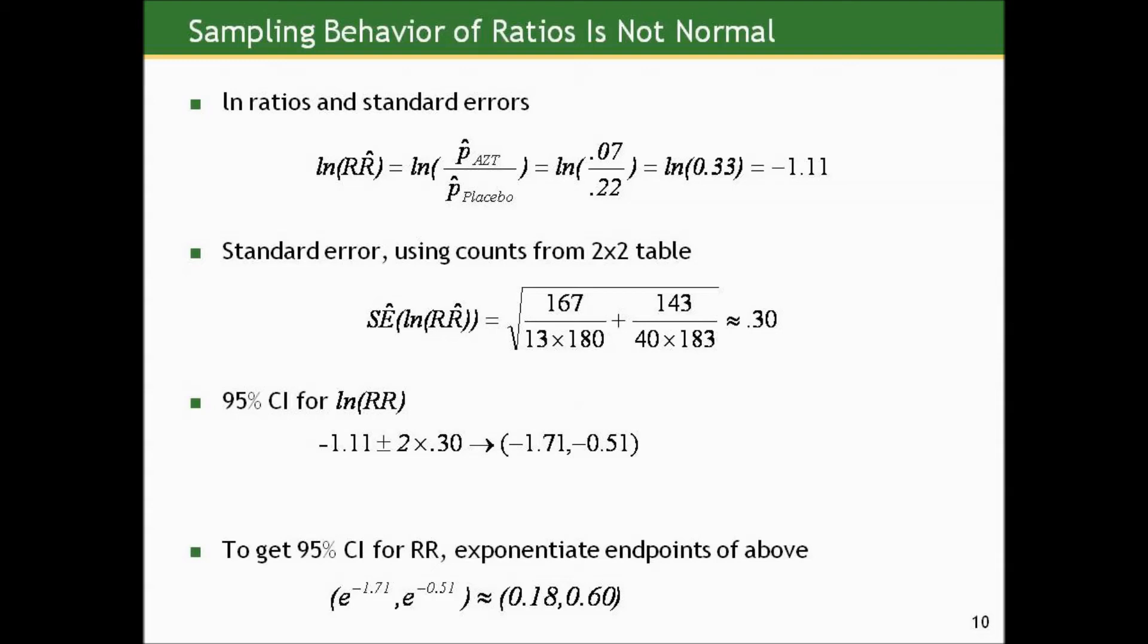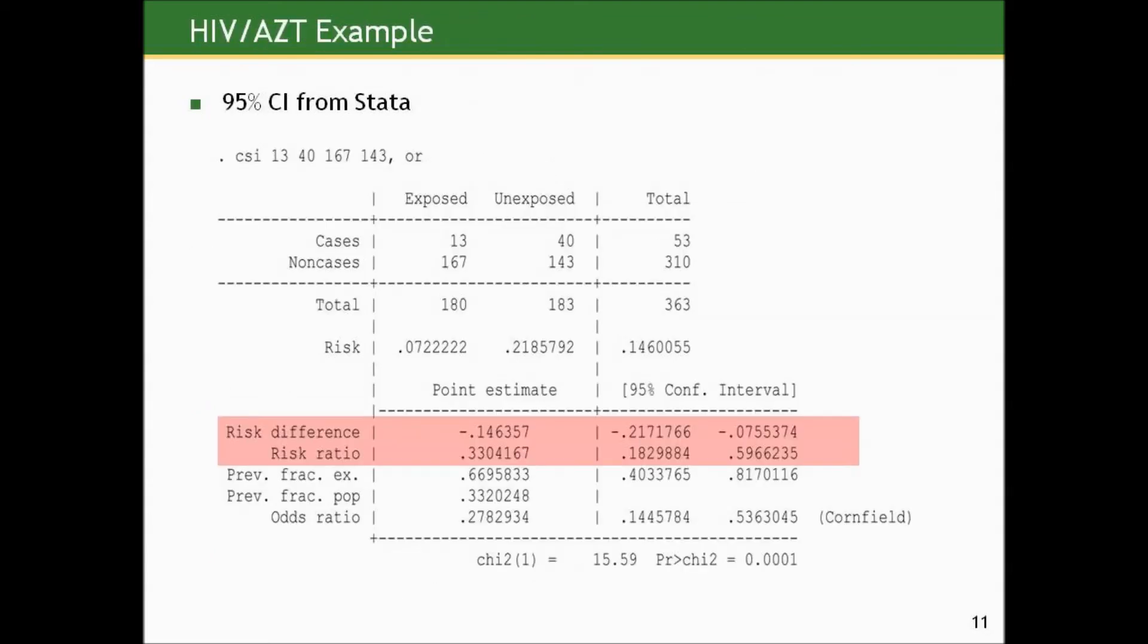So to get a confidence interval for the log relative risk, we take our estimated log of our estimated relative risk, that negative 1.11, add or subtract 2 times that standard error of 0.3, gives us a confidence interval of negative 1.71 to negative 0.51. And then to get a 95% confidence interval for the relative risk itself, we exponentiate the endpoints. e to the negative 1.71 power to e to the negative 0.51 power gives us a 95% confidence interval of 0.18 to 0.60. And that jives pretty well with what Stata gave us. The only differences are in slight rounding that I did that they don't do, but theirs runs from about 0.18 to about 0.60 as well.